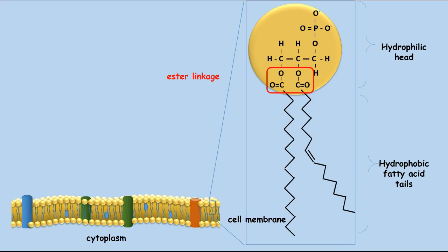The hydrophobic fatty acid tails can be saturated or unsaturated, but they're never branched. The kinks of the unsaturated tails allow for more spacing between neighboring phospholipids and allow membrane fluidity and diffusion of small hydrophobic molecules across the cell membrane.